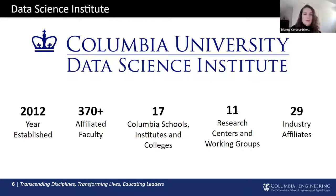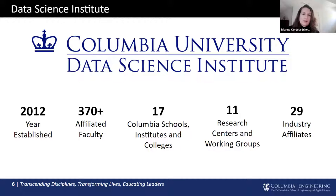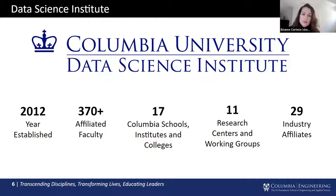Columbia's answer was the creation of a rich interdisciplinary institute to train the next generation of data scientists and develop innovative technology to serve society. There are about 40 founding members of the institute and over 370 affiliated faculty members from 17 schools, institutes, and colleges across the university. The institute strives to be the leading institution in research and education in the theory and practice of data science. As data science students, you'll have an opportunity to take advantage of the vast programming offered by the DSI.